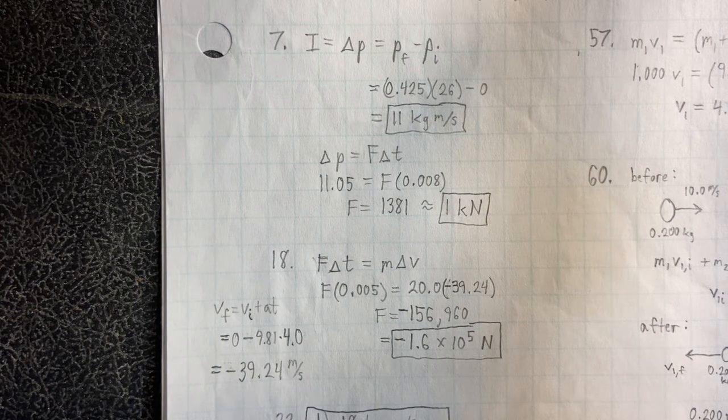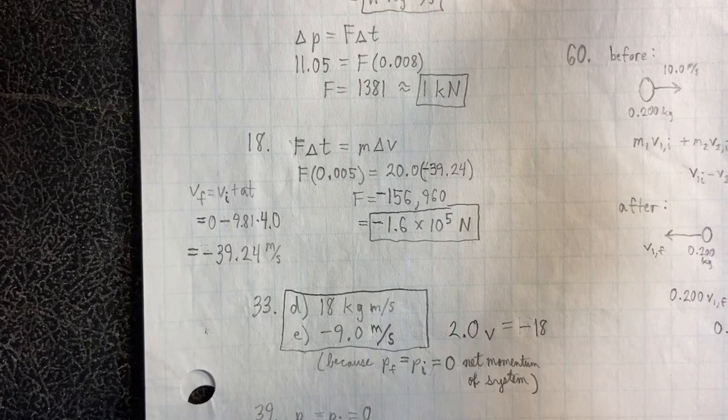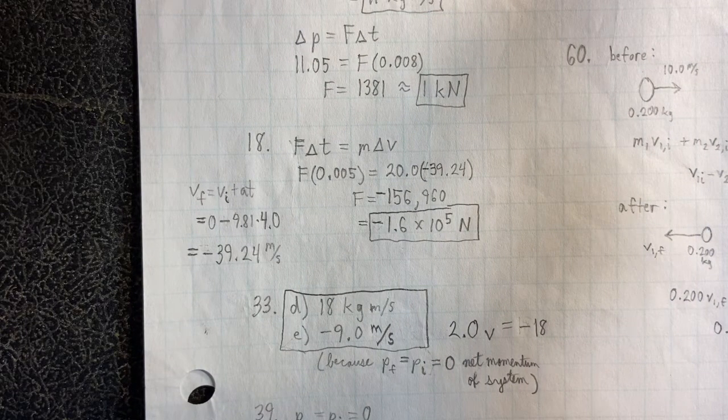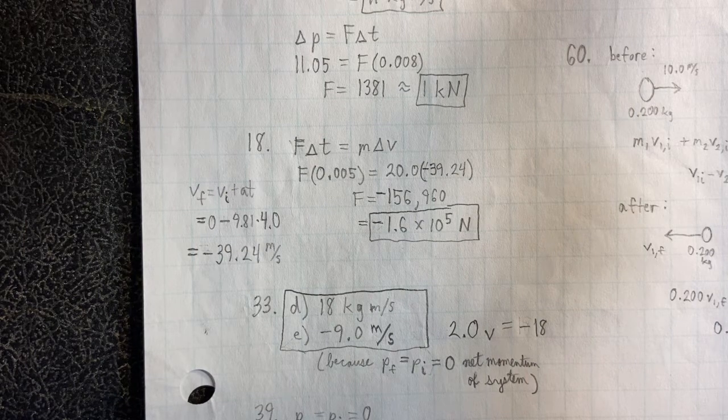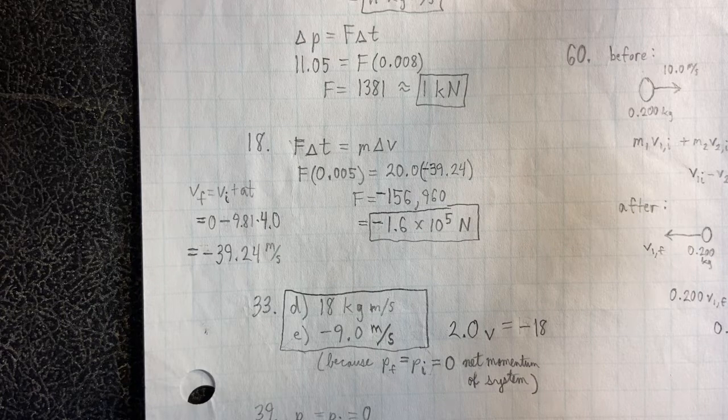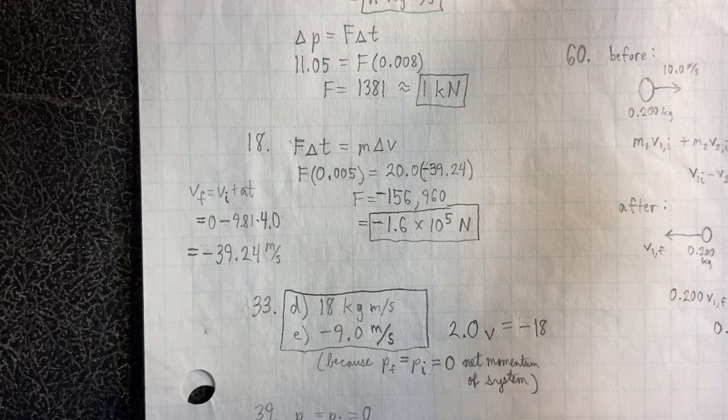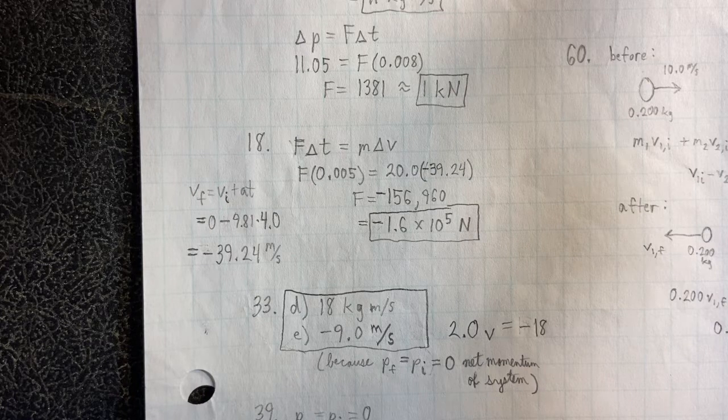All right, so number 33. I just asked you to do D and E. So D is 18 kilograms meters per second, and E is negative 9.0 meters per second because PF equals PI equals zero. That's the net momentum of the system.